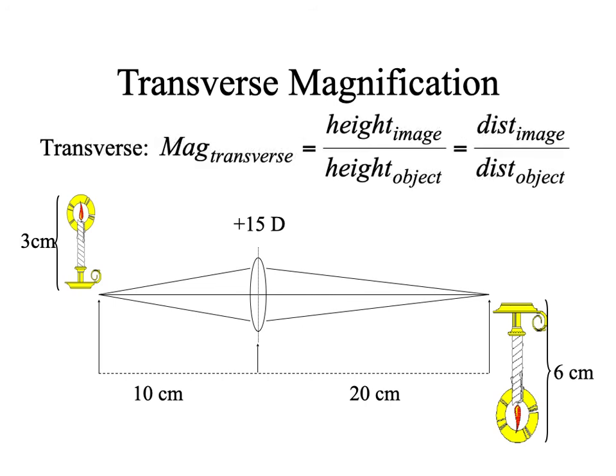No units. We're going to see similar triangles, and the height of the images is proportional to the distance to the images. So height of the image over height of the object is equal to distance to the image from the lens over distance to the object.